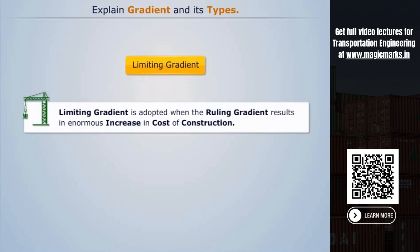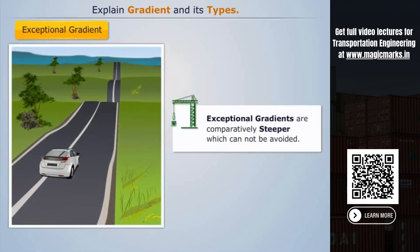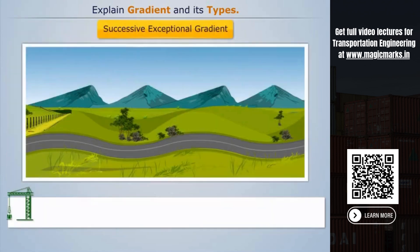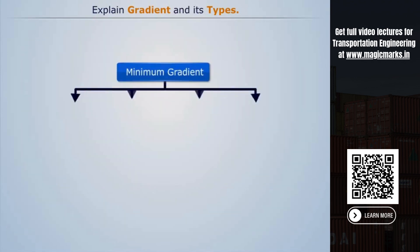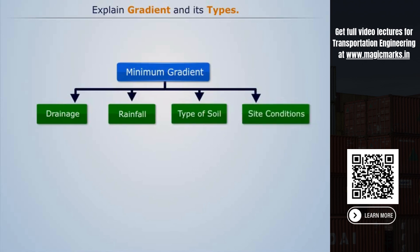Exceptional gradients are comparatively steeper gradients which cannot be avoided. The successive exceptional gradient must be separated by a minimum 100-meter length of gentle gradient in mountainous and steep terrain. Minimum gradient is provided for drainage purposes, which depends on rainfall, type of soil, and site conditions.